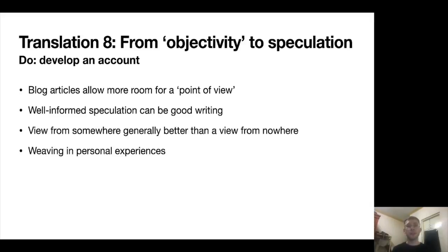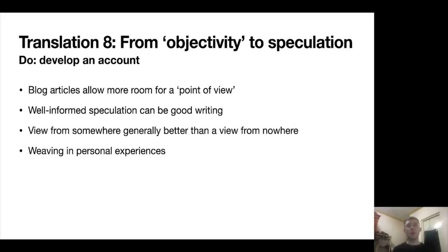Another translation is moving from objectivity to speculation. I put 'objectivity' in quotes because I don't think objectivity is ever fully possible, and I don't think blind speculation is good either. But blog articles can be a great way to express a point of view. Academic writing doesn't like forward-facing speculation — we write about what's happened, not what might happen two years from now. Blog articles are a great place, if you've got data and really know the topic, to talk about what you think might happen, express your point of view, or put yourself into the piece. In a blog article context, a view from somewhere is always better than a view from nowhere.